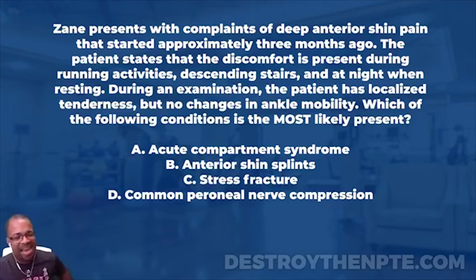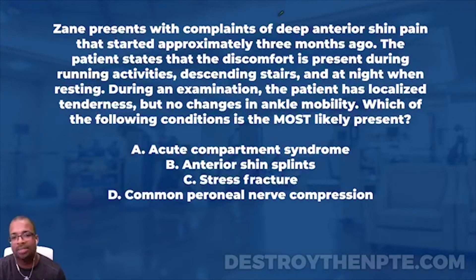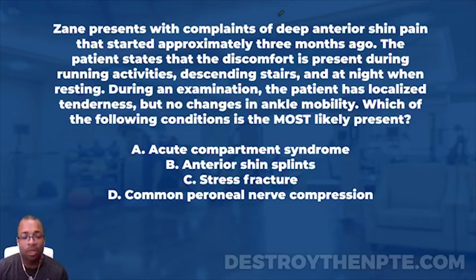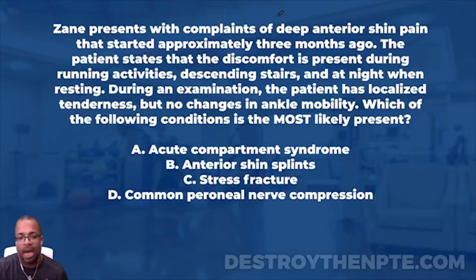For this week's Challenge Wednesday, we have Zayn, and Zayn presents with complaints of deep anterior shin pain that started approximately three months ago. The patient states that the discomfort is present during running activities, descending stairs, and at night when resting. During an examination, the patient has localized tenderness but no changes in ankle mobility. Which of the following conditions is most likely present? A: acute compartment syndrome, B: anterior shin splints, C: stress fracture, D: common peroneal nerve compression.